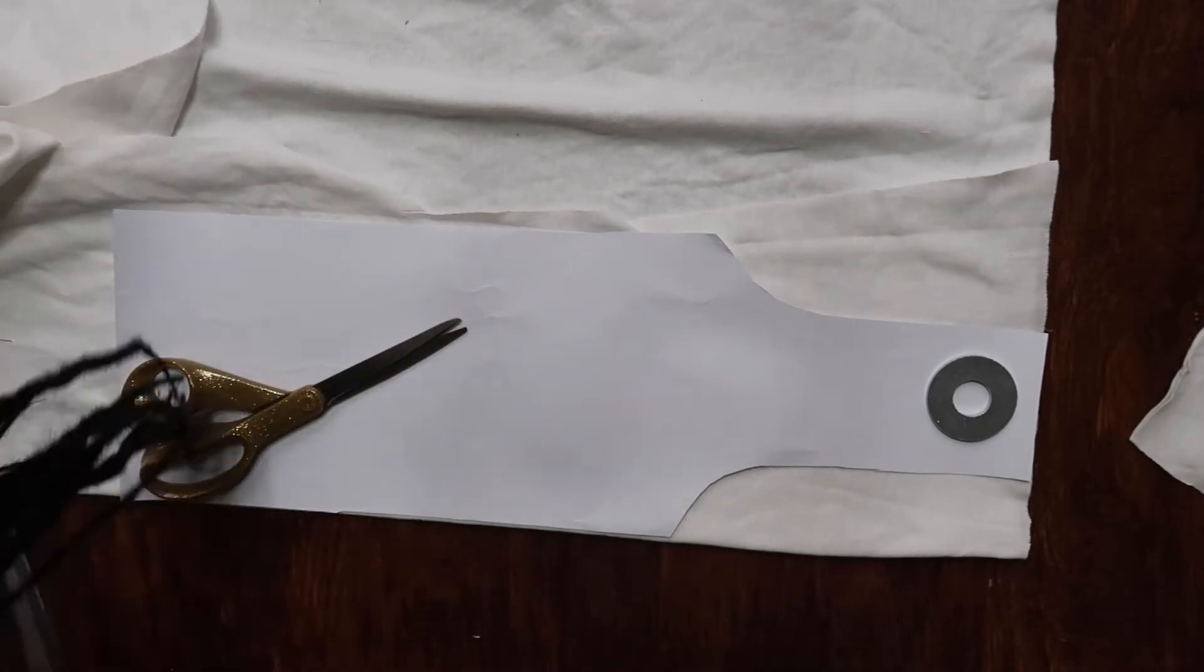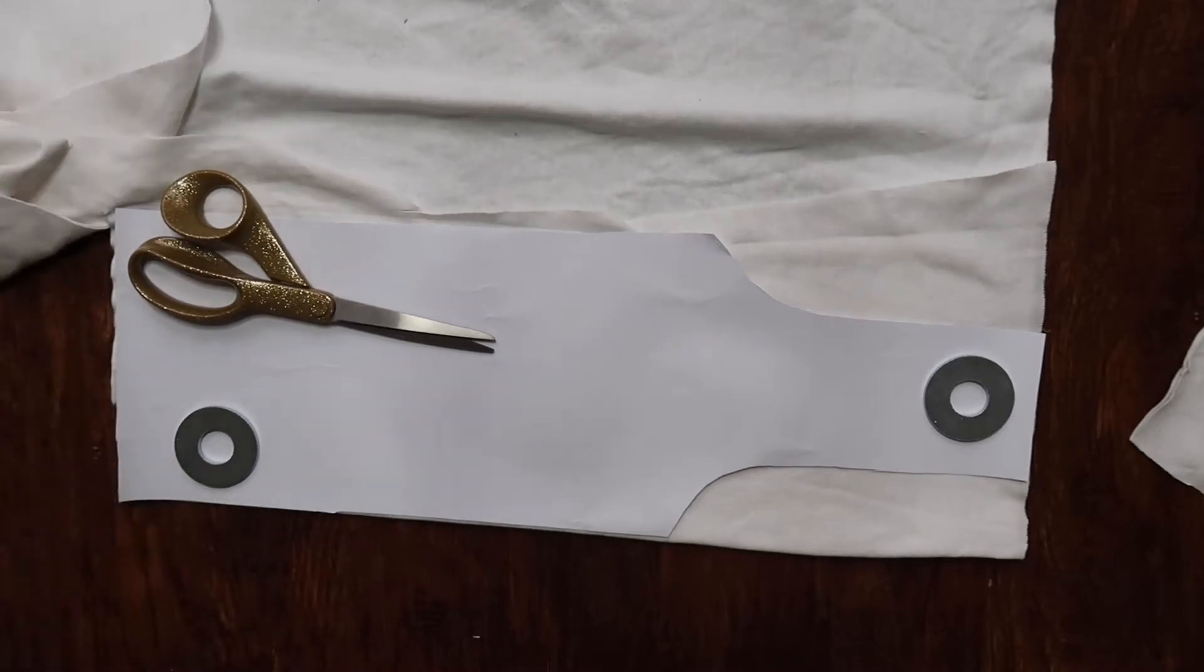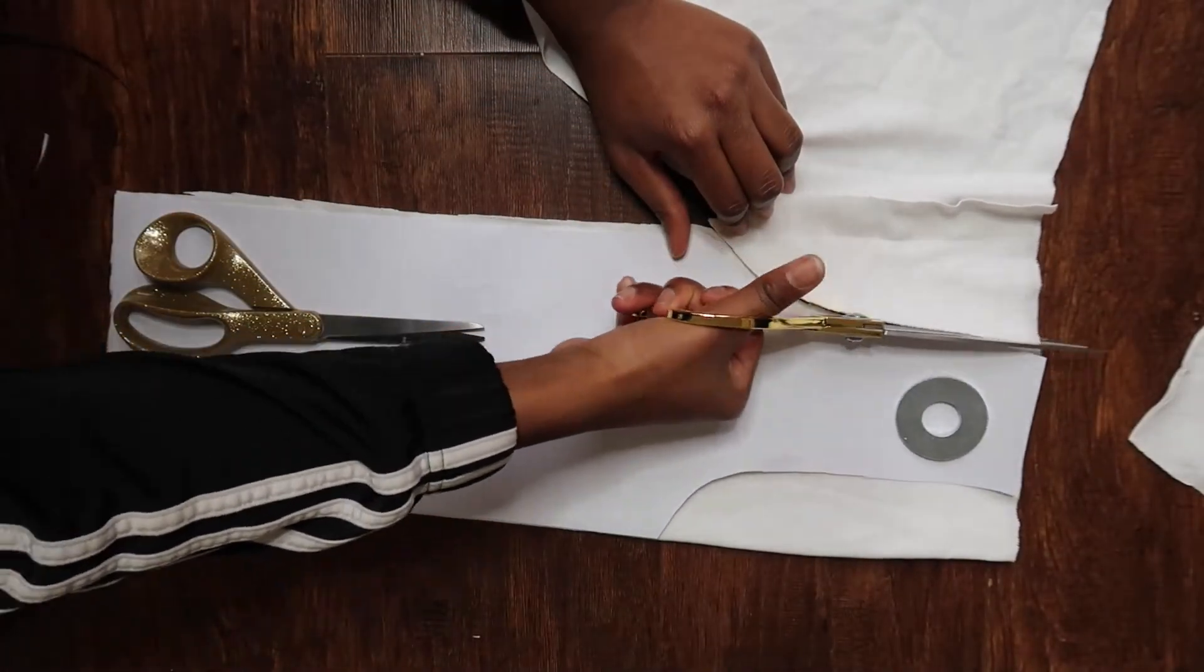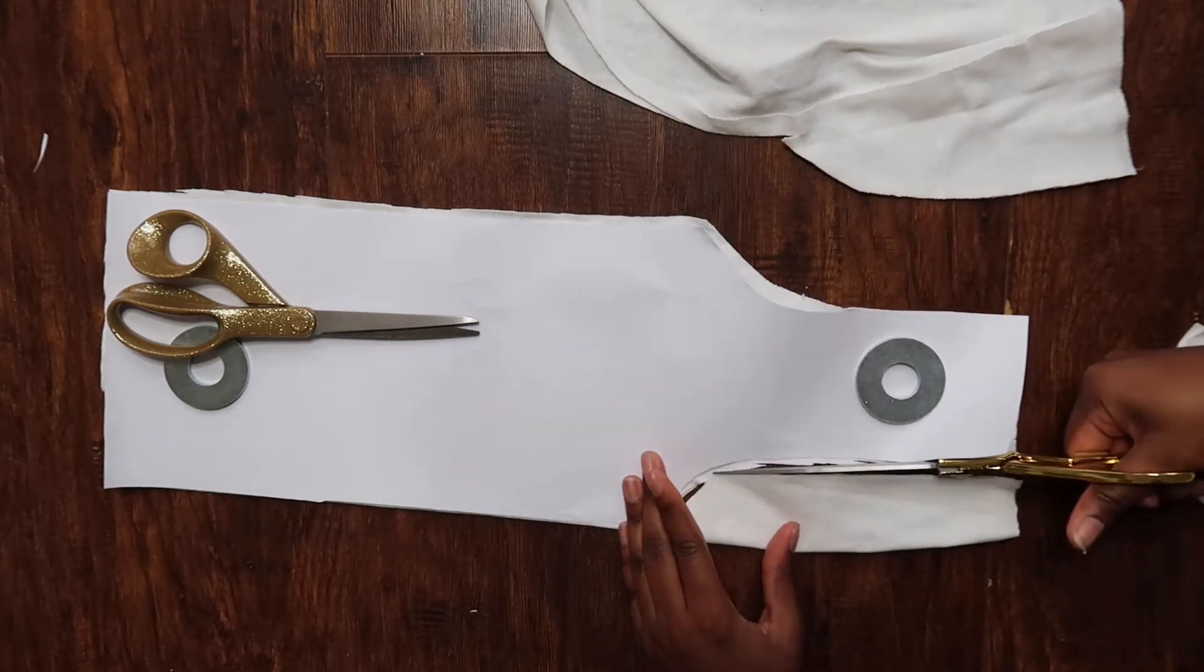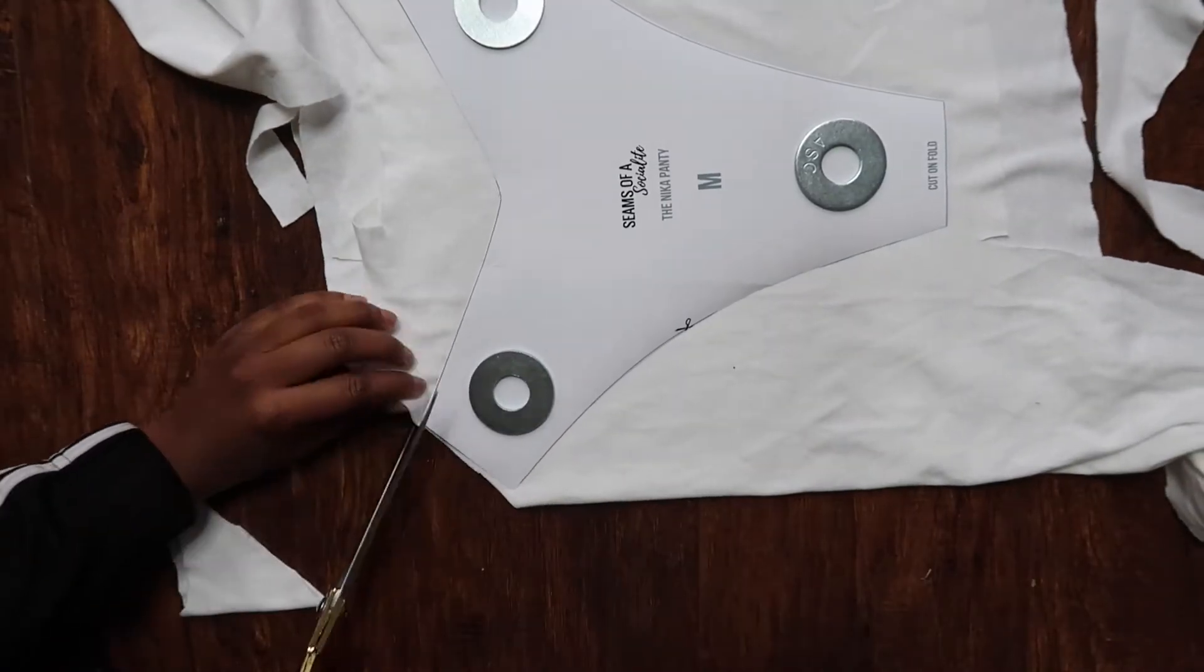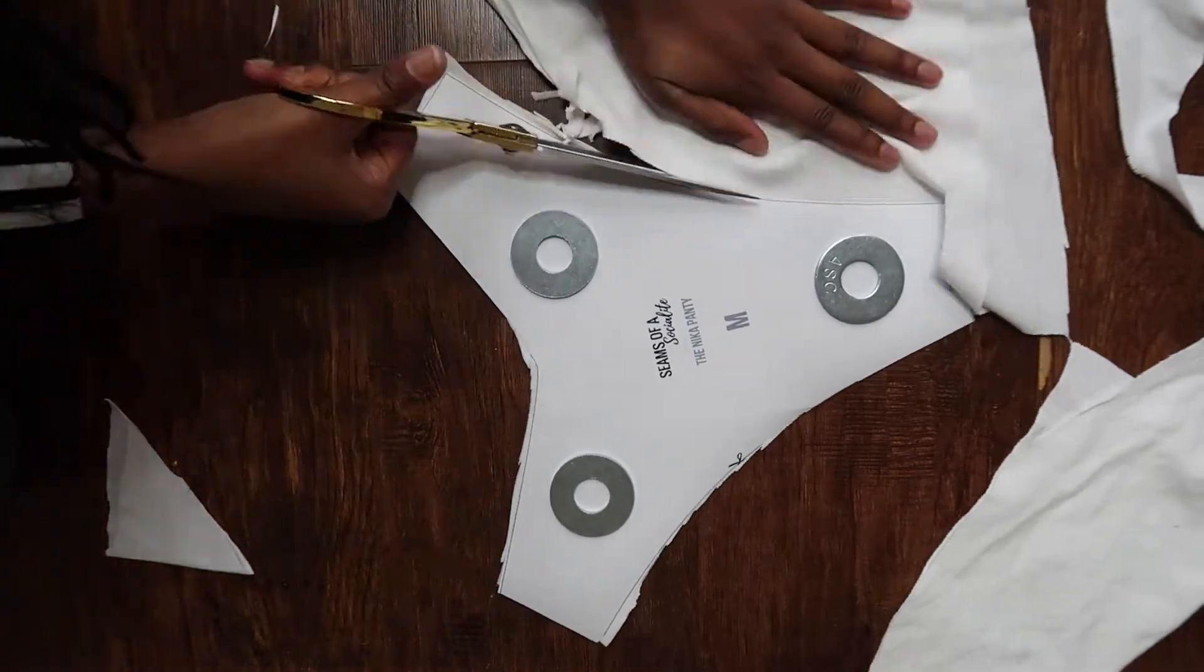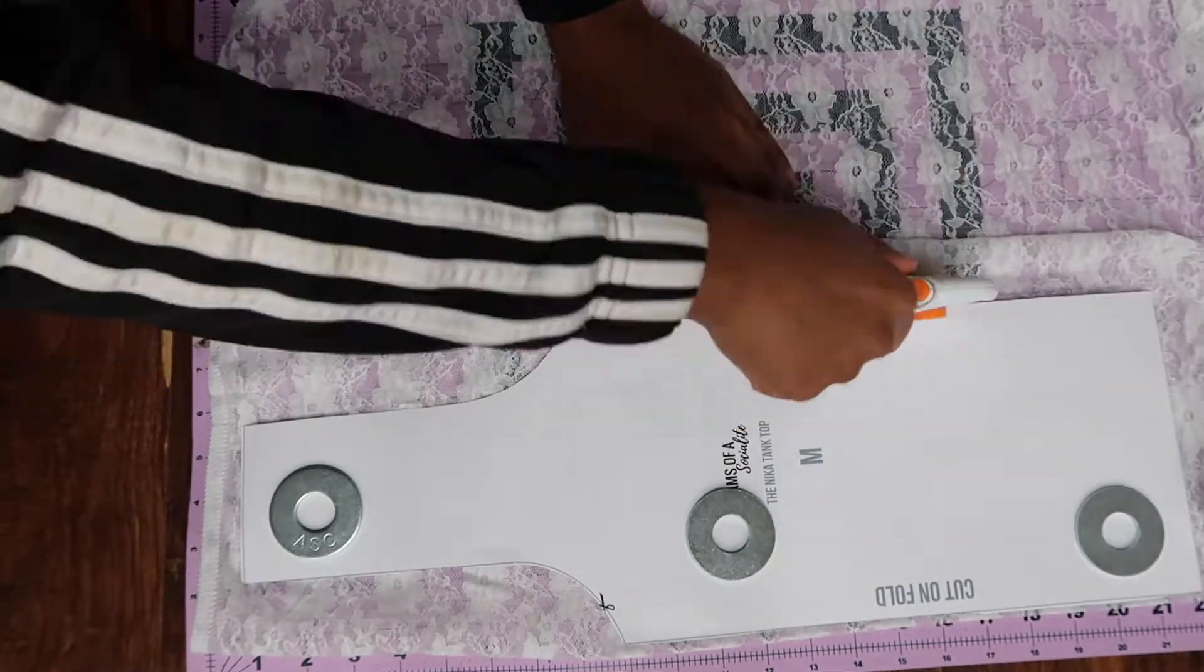When it came to the panties, I had to cut two pieces in the tubular knit instead of an attached piece on the fold because I didn't have enough. So make sure you have more than enough fabric to lay everything out the way it's supposed to be.